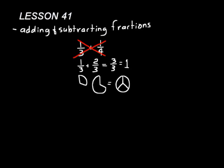Hopefully that makes sense. Like this problem we just did — you wouldn't add the two denominators, three plus three, because then you would have ended up with three-sixths. We can clearly see from our picture that we didn't end up with half of a circle. We ended up with a whole circle when we added a third and two-thirds. So when adding and subtracting fractions, the only part that you do addition or subtraction on is the numerator. Remember that.